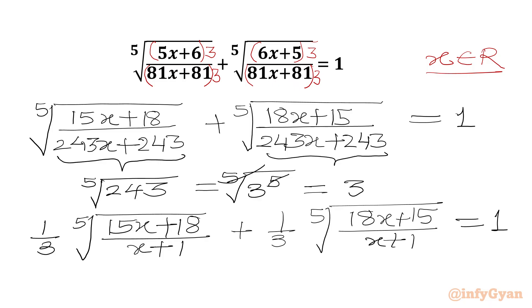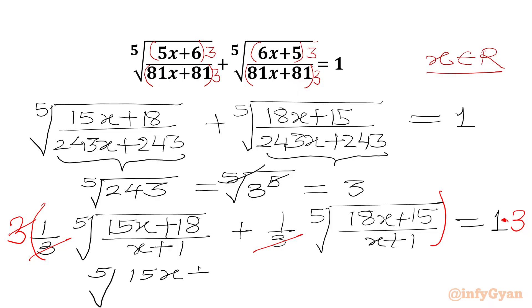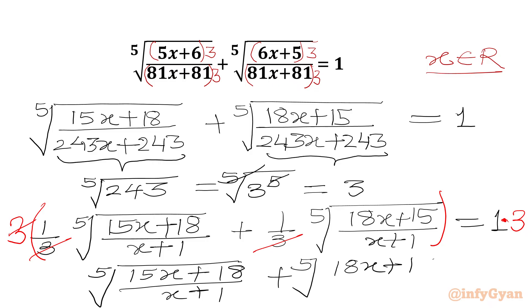Now we will multiply this equation by 3 on both sides. So 3 and the denominator 3 will cancel from the left-hand side. We will get our equation: fifth root of (15x+18)/(x+1) plus fifth root of (18x+15)/(x+1) equal to 3.